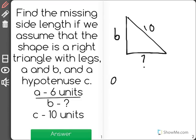Now remember the Pythagorean theorem says that A squared plus B squared equals C squared.